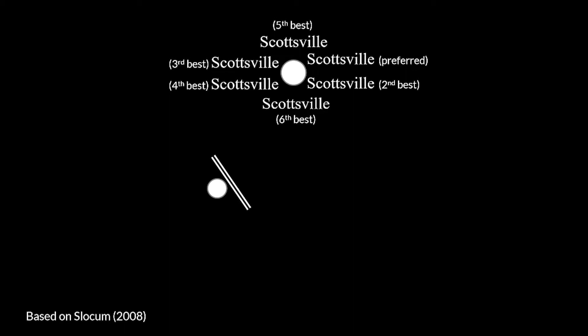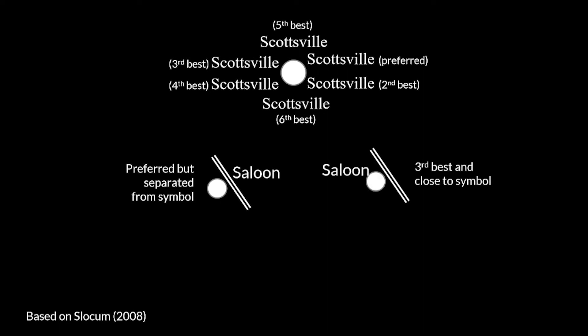However, it is often the case that a different map symbol might block where the label goes. For example, in this image we see that the point symbol is next to a line symbol. In this case, you could use the preferred label spot of the top right, but the label is visually separated from its symbol and can cause ambiguity as to what the label is actually referring to. In this case, the third preferred label position can be used to keep the label near the symbol.